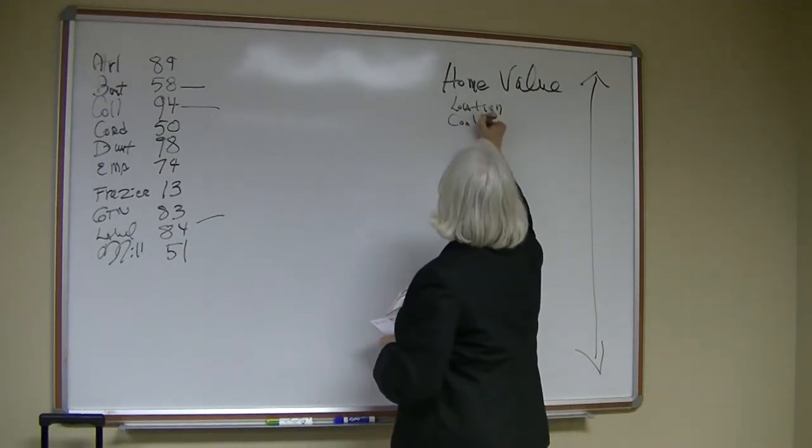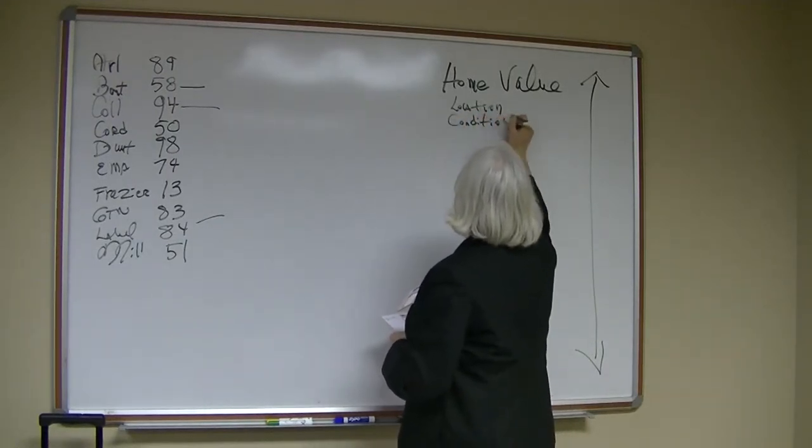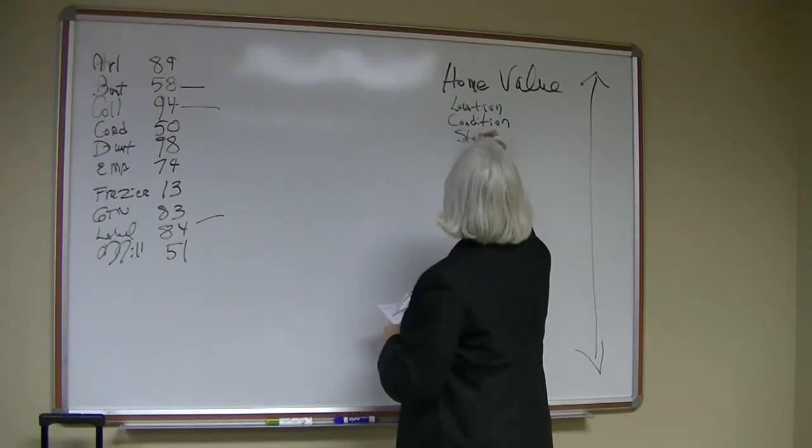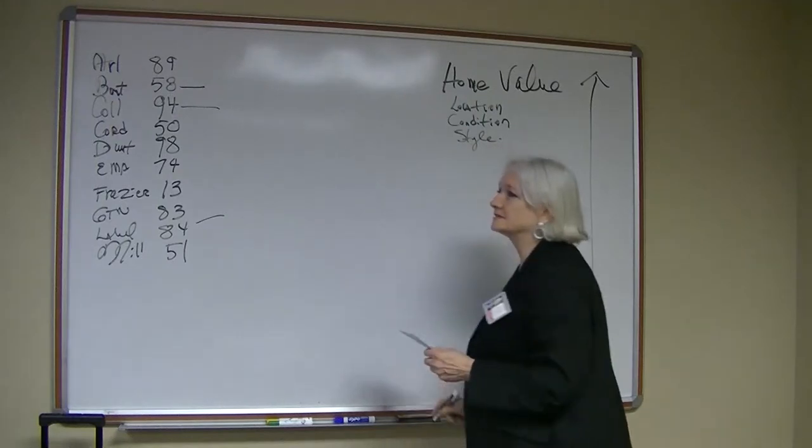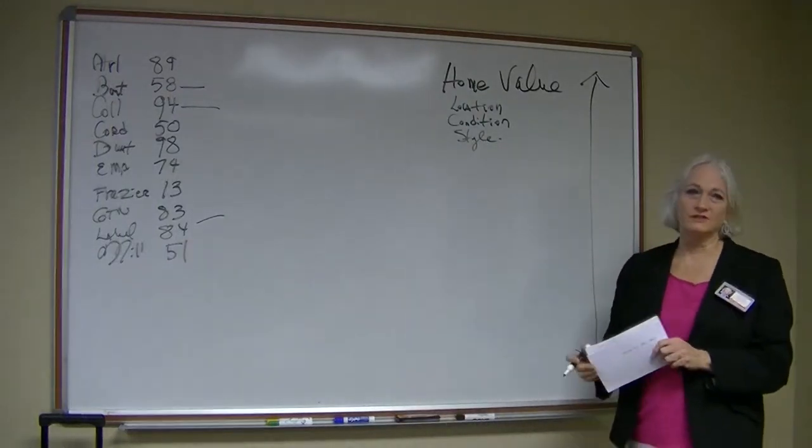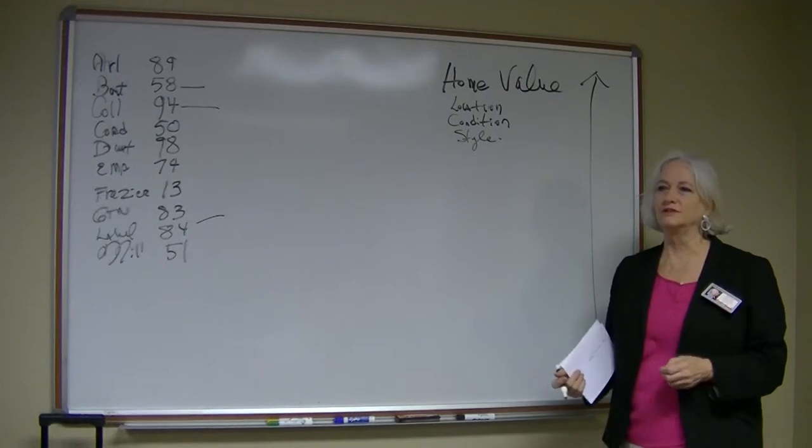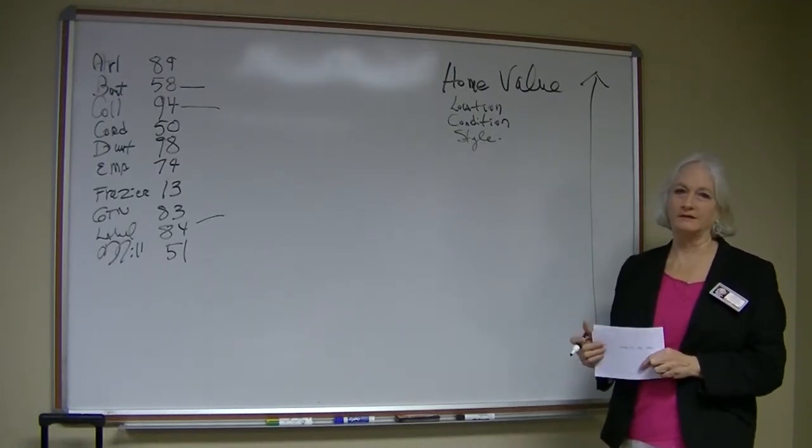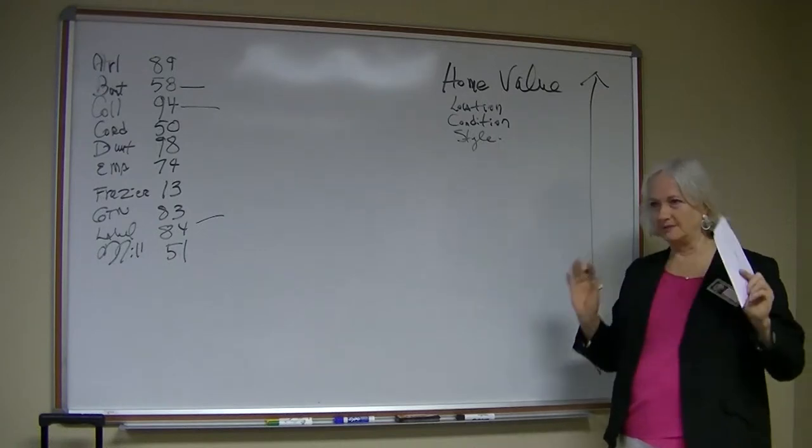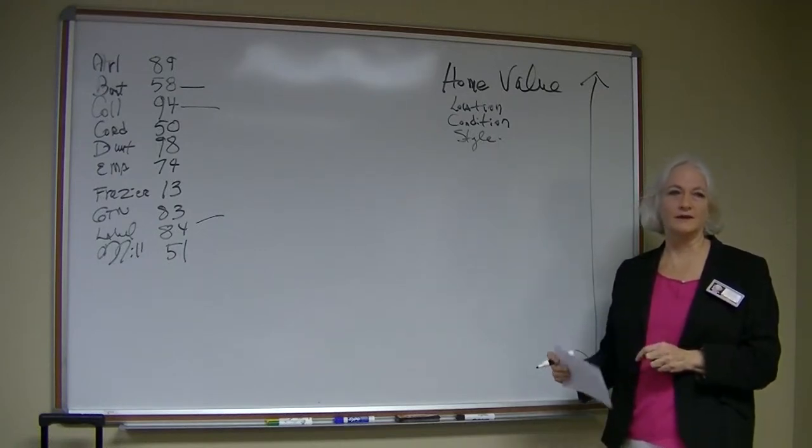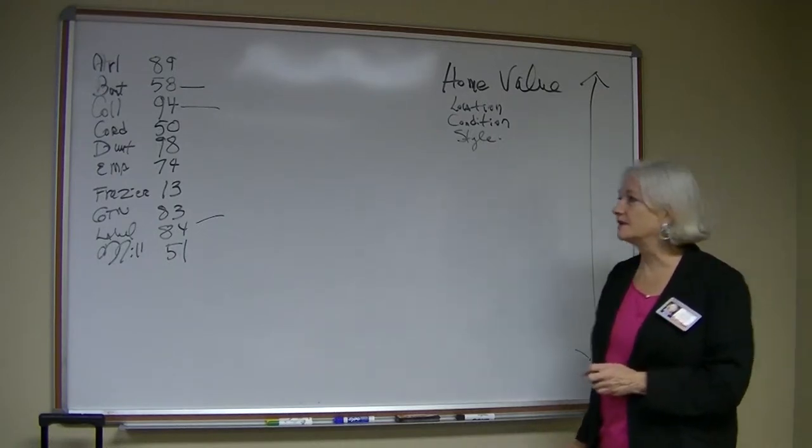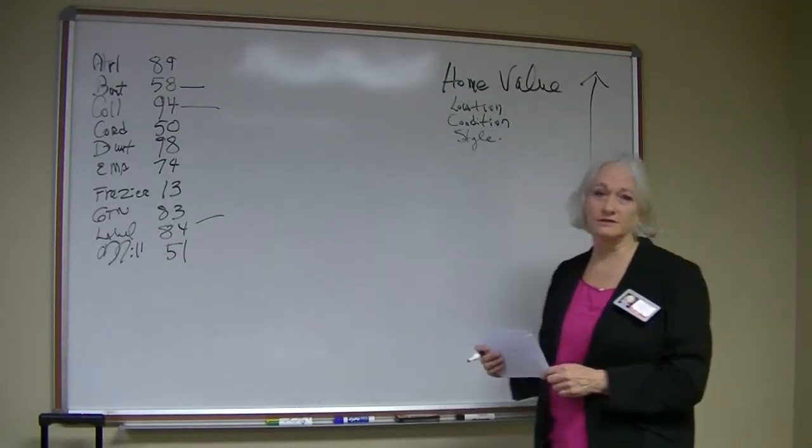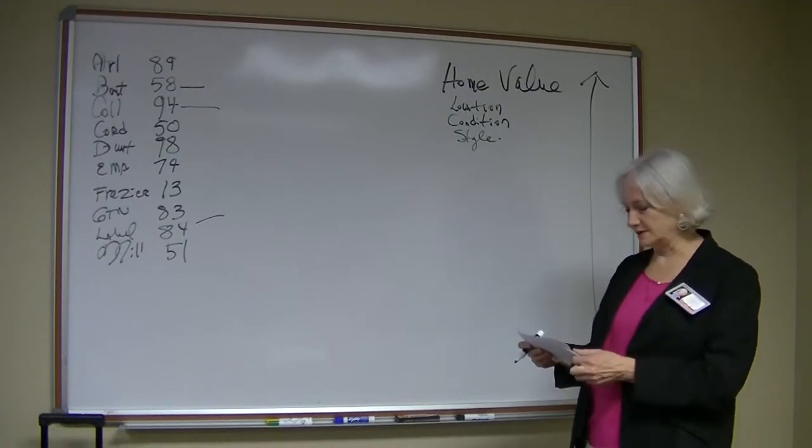And other than location, the overall condition is real important. The style. Memphis is like a super traditional city. I mean, there are some wonderful homes here that are real contemporary. Certain neighborhoods will handle that, like in Midtown, and go ahead and move forward with a price per square foot not being affected. But even in areas, the suburbs like Germantown and Collierville, if you've got a real contemporary house, it's a price sign.